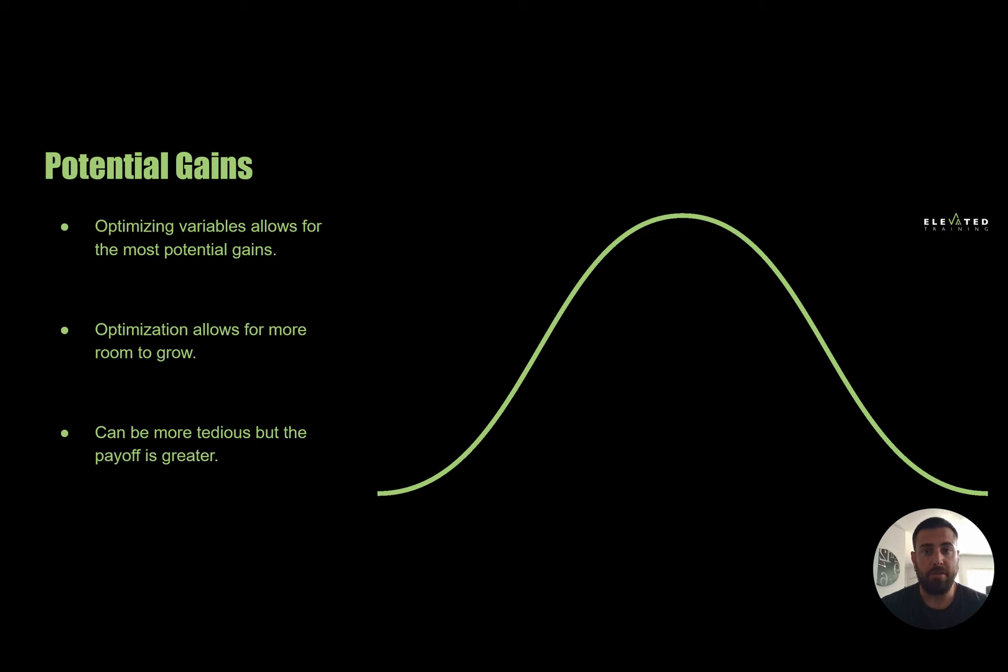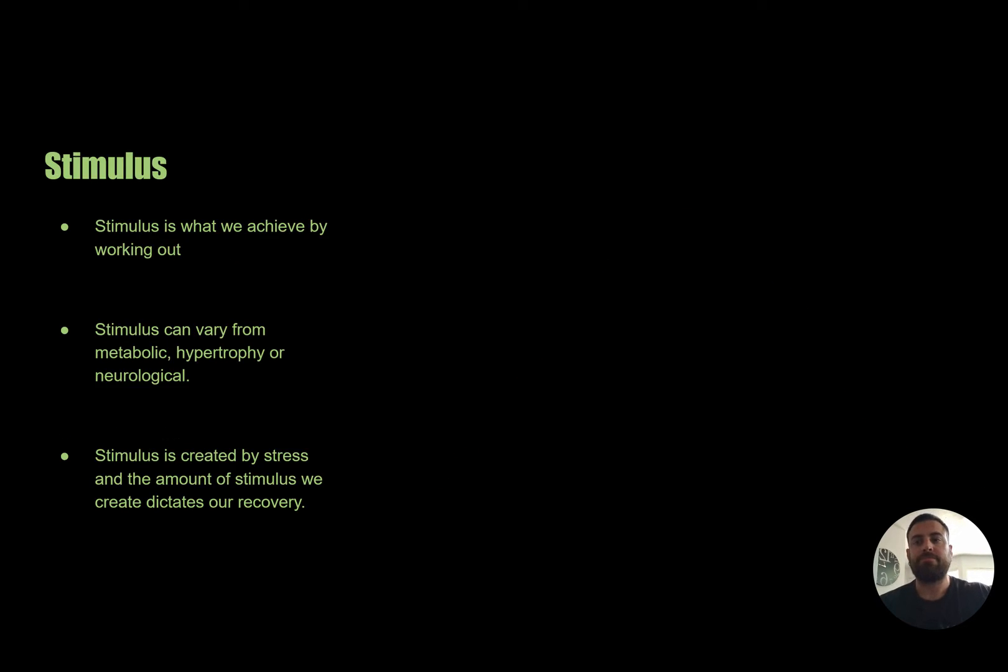And the bigger or more optimized everything is, the more room we have for making gains. Even if we're not hitting things perfectly, it's allowing us more room for growth. Even though optimizing everything can be a tedious task, the payoff is much greater. Now this bell curve is split into two sections.